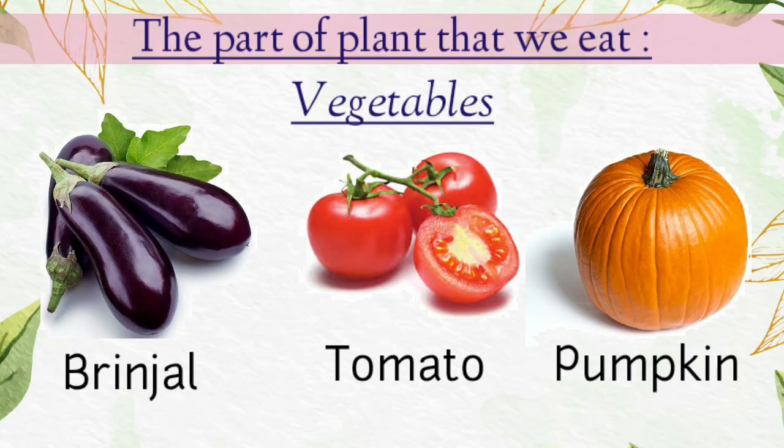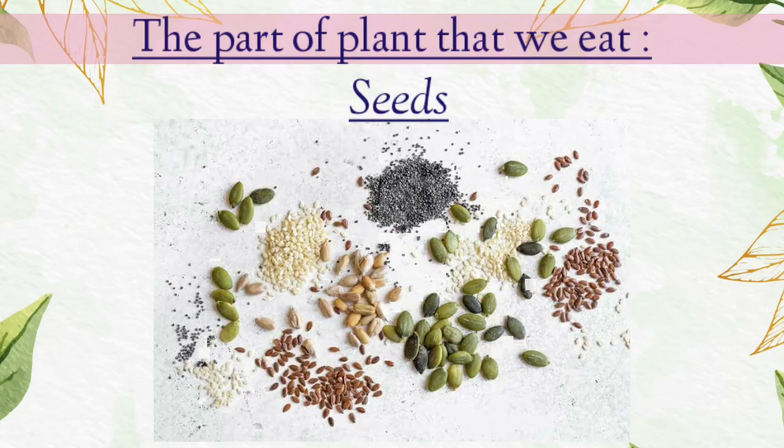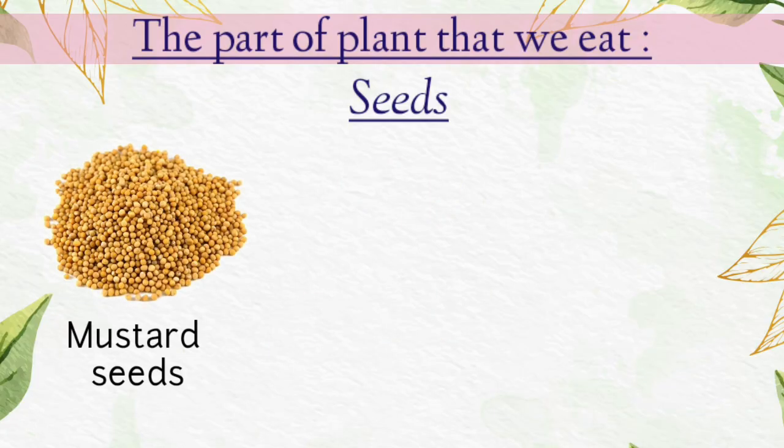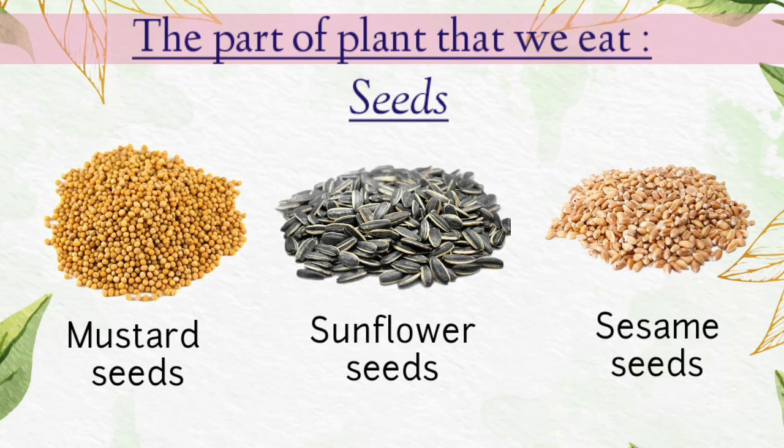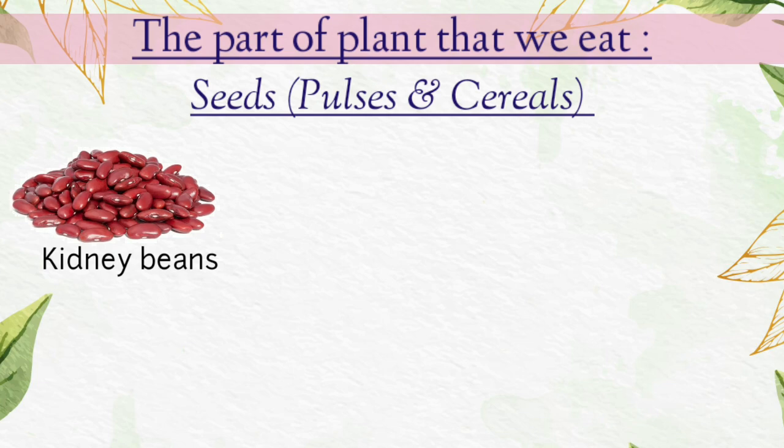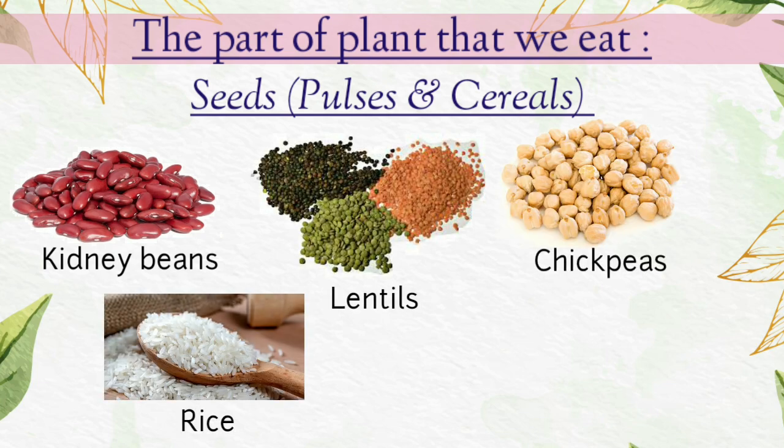Now, here comes the last part of plant we eat and that is seeds. Seeds grow inside fruits. You know, children, seeds store food for baby plant. The seeds that we eat are mustard seeds, sunflower seeds, sesame seeds, pulses and cereals such as kidney beans, lentils, chickpeas, rice, wheat.